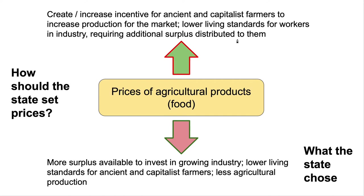If they lower agricultural prices, there's more surplus available to invest in growing industry — but the downside is lower living standards for farmers and probably less agricultural production. This is what the state chose. It's fashionable to say the Soviets didn't understand basic economics, but that's not correct. They had a lot of internal debates about price setting and were well aware of the law of demand and the law of supply.